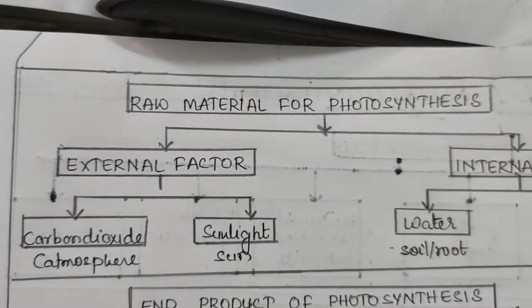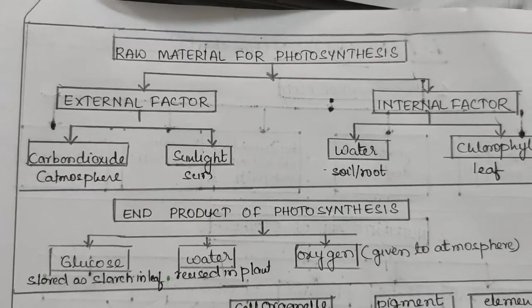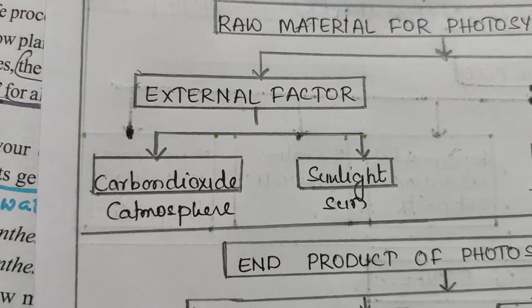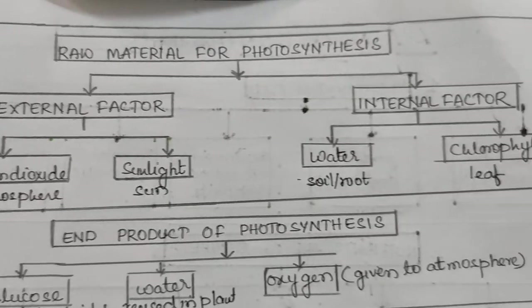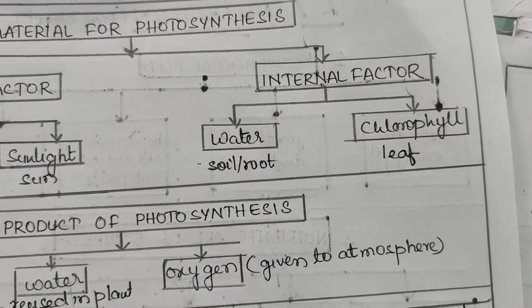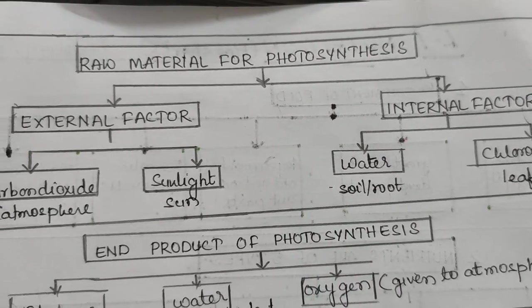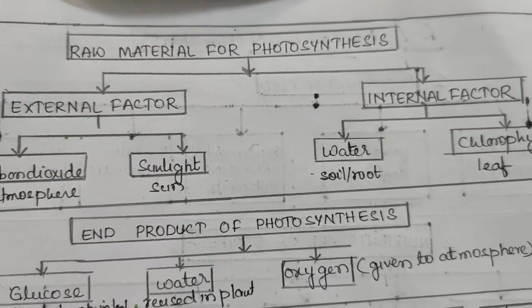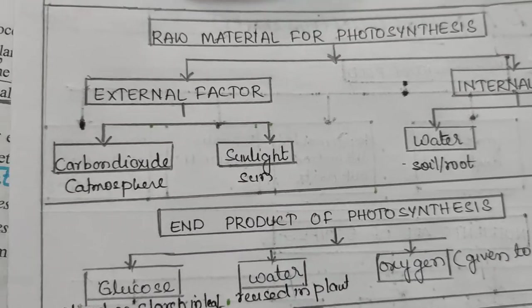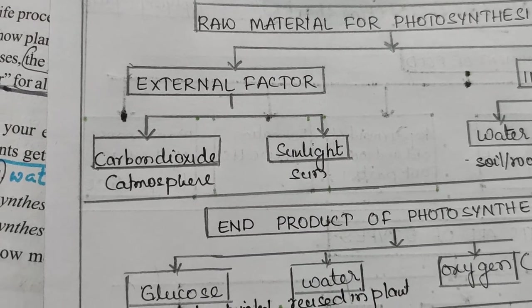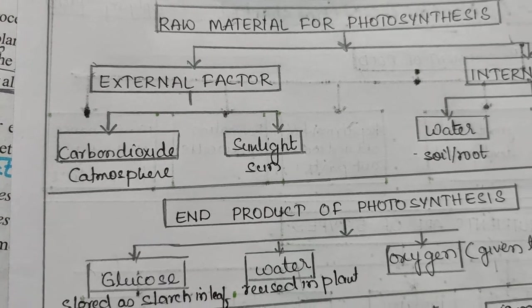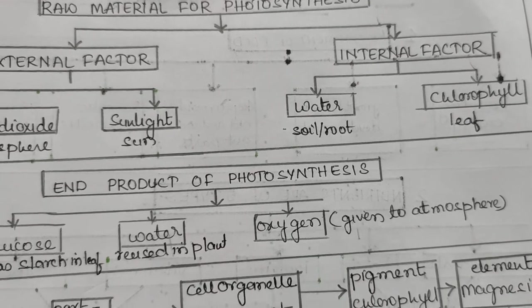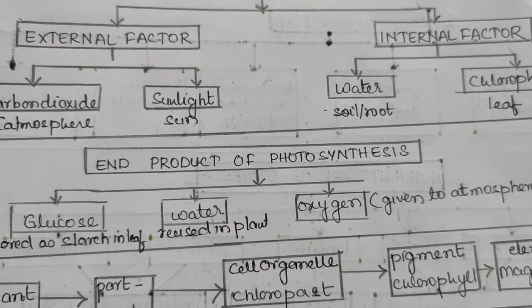The raw materials for photosynthesis include external factors — carbon dioxide and sunlight — and internal factors — water and chlorophyll. Carbon dioxide is obtained from the atmosphere, sunlight from the sun, water from the soil through the roots, and chlorophyll is already present in the leaf.